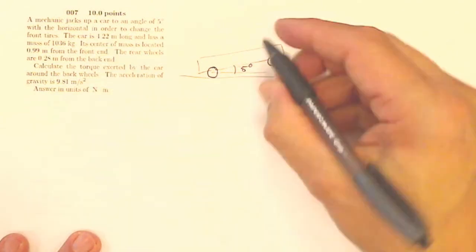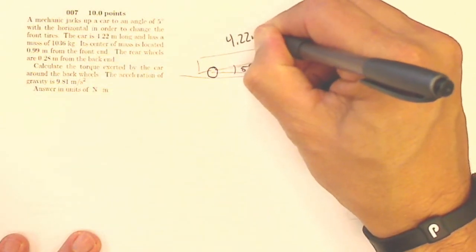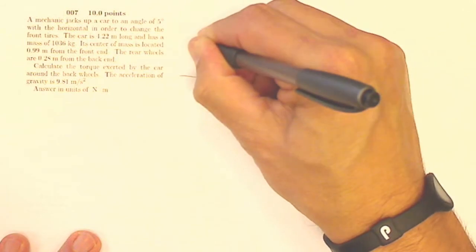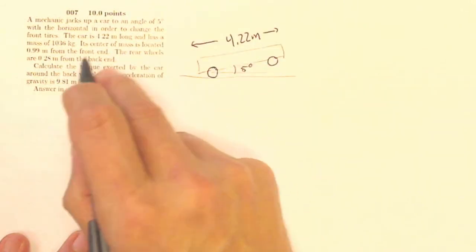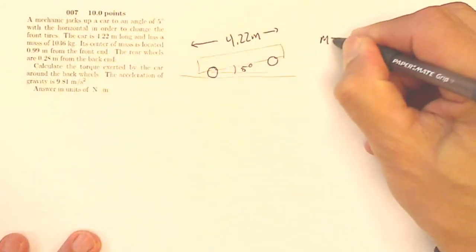The car is 4.22 meters long. So this is overall 4.22 meters from one end to the other. The mass is 1036 kilograms. I should write that down.